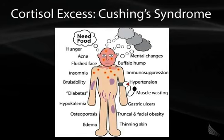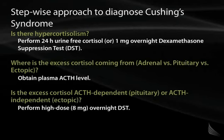If regulation of cortisol is perturbed, pathophysiology ensues — either too much or too little cortisol. Too much cortisol causes Cushing syndrome, with classical manifestations including buffalo hump, moon facies, diabetes, truncal adiposity, and purple striae. One challenge of diagnosing Cushing syndrome is understanding the associated diagnostic testing. The best approach is stepwise — there are three steps to identify the source of excess cortisol.